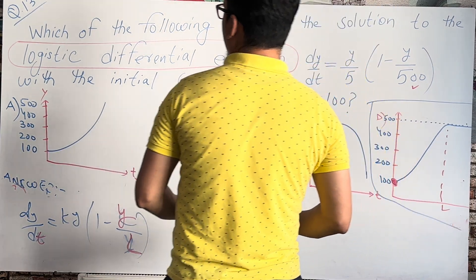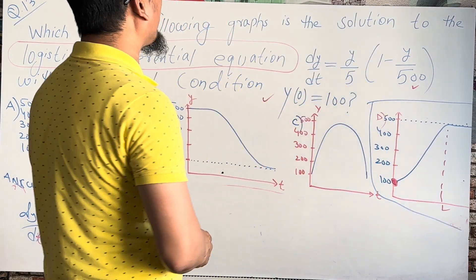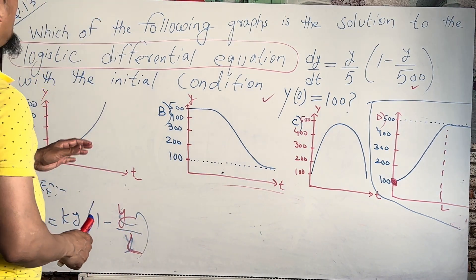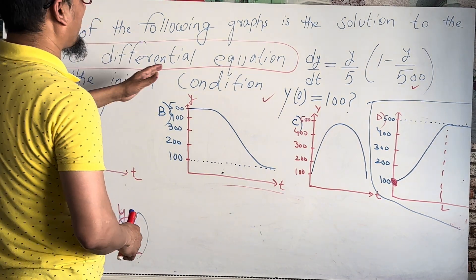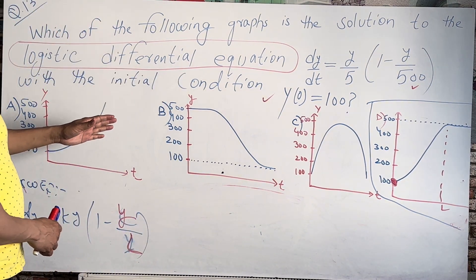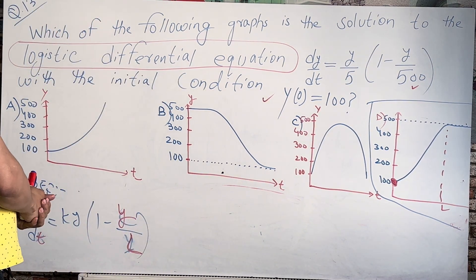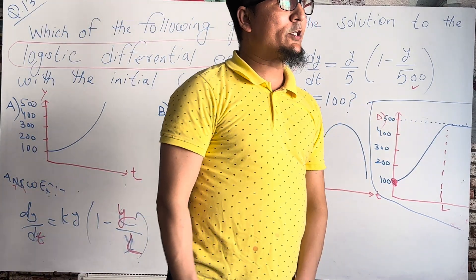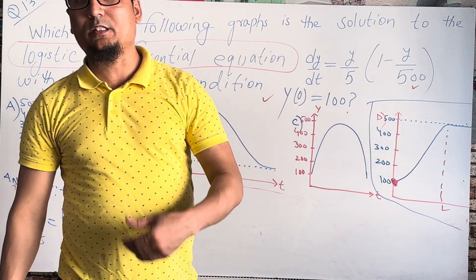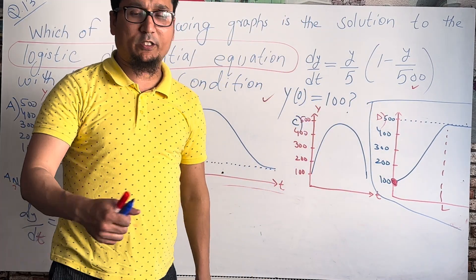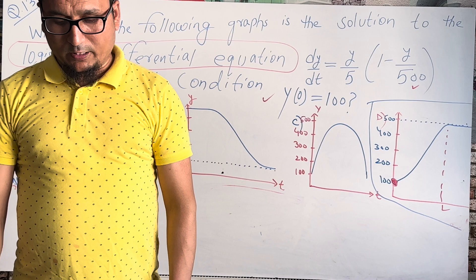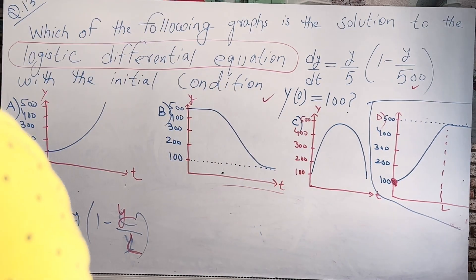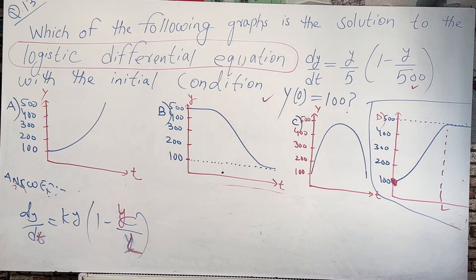So the answer to 'which of the following is the solution to the logistic differential equation' is D. I hope you all understand. If you still have a problem, you can send me a message and inshallah I will help you. Take care, bye bye.